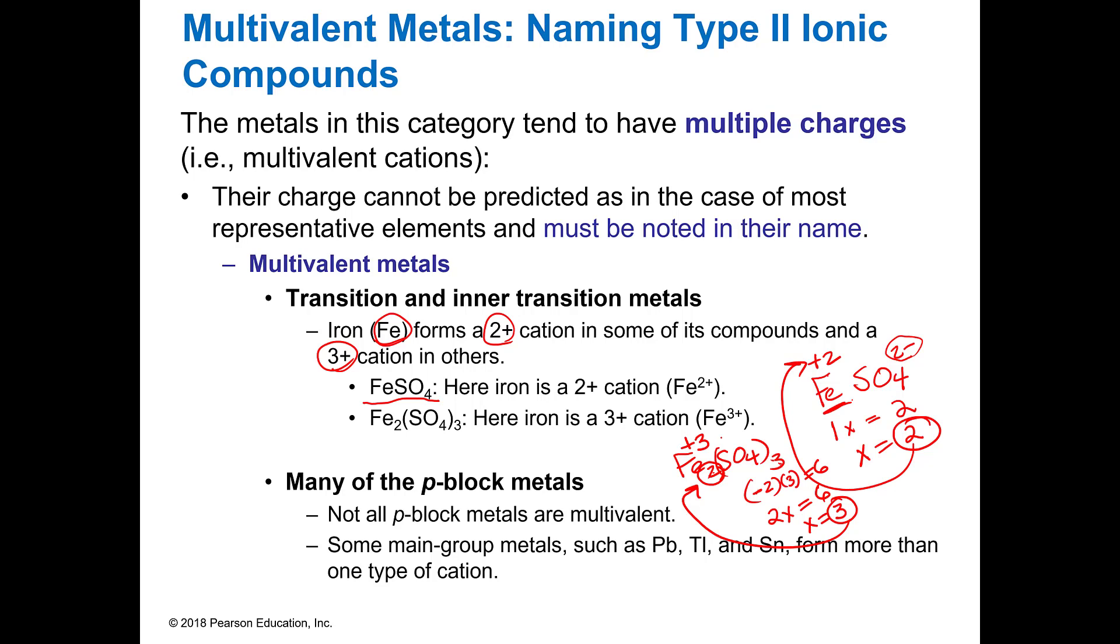Why is this important? Because when I name this, I'm going to have to tell you that that's iron two and this one is iron three. So I must be able to figure out what the charge is so that I can tell you the name. So if you go back and write the formula, you can write it correctly.